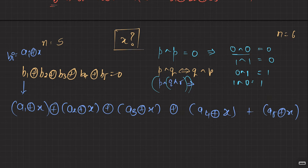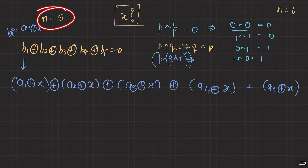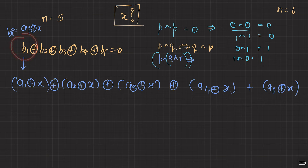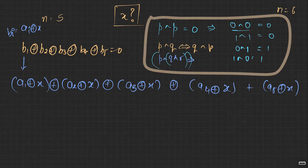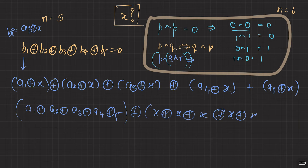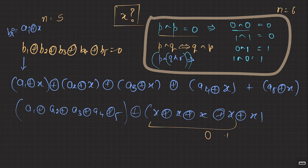I want to simplify the expression b1 XOR b2 XOR ... XOR b5 equals zero, where each b_i = a_i XOR x. Using the associative and commutative properties of XOR, we can collect all the x terms together. It becomes: a1 XOR a2 XOR a3 XOR a4 XOR a5 XOR x XOR x XOR x XOR x XOR x (five times). By the property that p XOR p = 0, pairs of x cancel each other. With five x's, four cancel in two pairs, leaving one x.